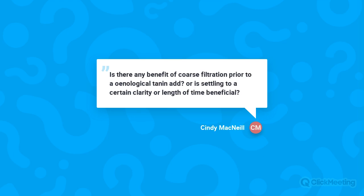Cindy McNeil asks whether coarse filtration prior to enological tannin addition is beneficial. I don't think coarse filtration is necessary before the tannin addition — you can add tannins to a wine with some turbidity. For very turbid wines, a racking before the tannin addition would help, as solids could compete for binding sites. Racking off reductive lees is generally a good idea anyway, as pulp material can contribute to reduction and lees themselves can become reductive.